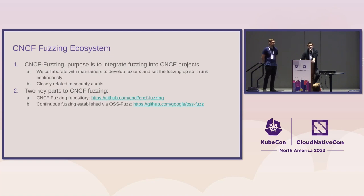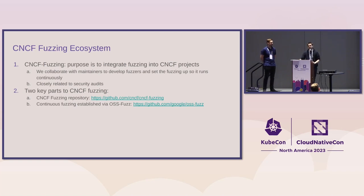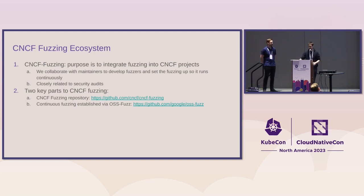Another key component in CNCF fuzzing is the project OSS-Fuzz, a service run by Google. It's essentially a GitHub repository where you place some files that build the fuzzers for your project — Istio has a project folder, Envoy has a project folder, and Google will then build your software and run it in the cloud, reporting any issues found on a daily basis. You develop a fuzzer, put it in the repository, and they will run it for the next ten years or as long as they keep it going. This is really central to the way we fuzz in CNCF.